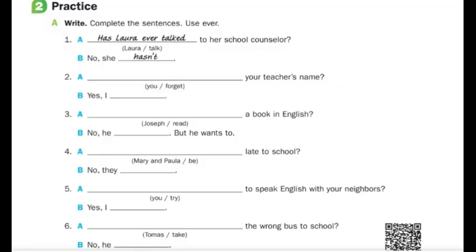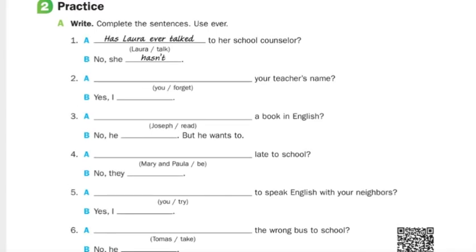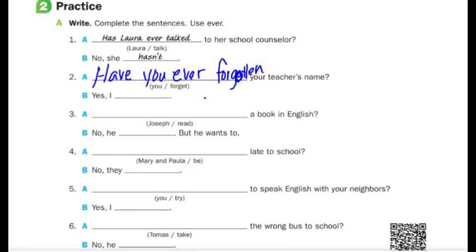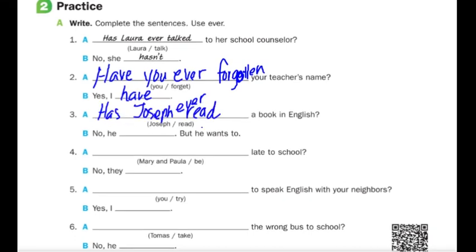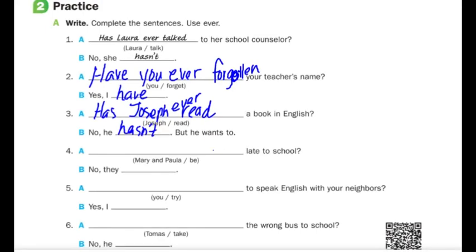Practice: Write and complete the sentences using 'ever.' Number one: Has Laura ever talked to her school counselor? No, she hasn't. Number two: Have you ever forgotten your teacher's name? Yes, I have. Number three: Has Joseph ever read a book in English? No, he hasn't — but he wants to.